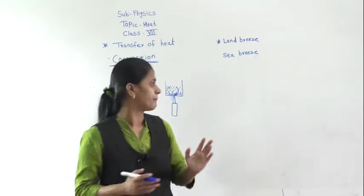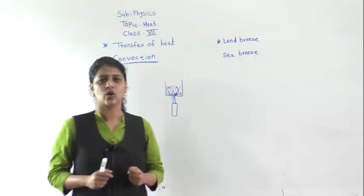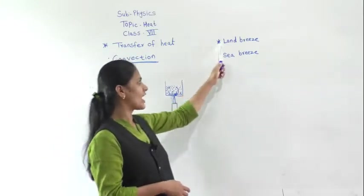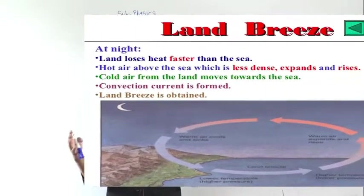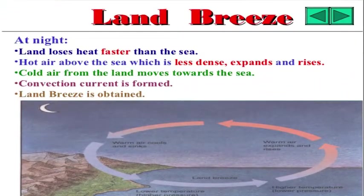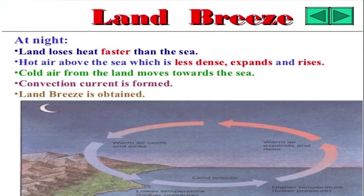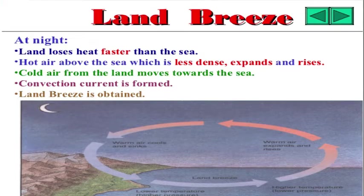We can see the convection effect in our day-to-day life near the sea coast — this is called land breeze and sea breeze. Land breeze happens during night time. During the night, the land cools very fast while the sea cools slowly. Because the land is cooler, the air blows from the land to the sea. This process is called land breeze, and it takes place during the night time.